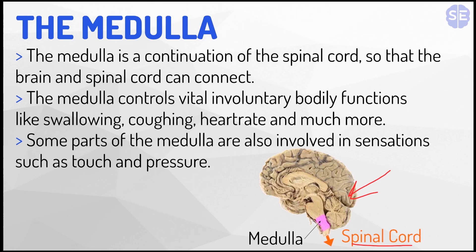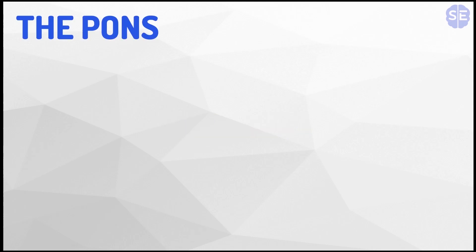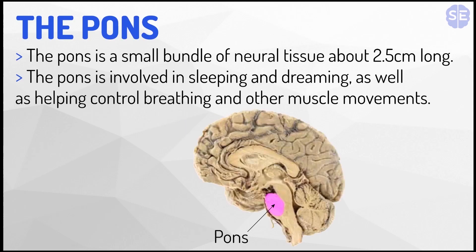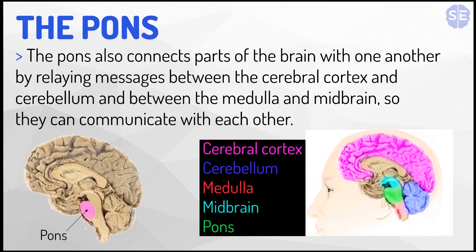Now the last part of the hindbrain: the pons. The pons is a small bundle of neural tissue, about 2.5 centimeters long. The pons is involved in sleeping and dreaming, as well as helping control breathing and other muscle movements. You can see where it is in pink. The pons also connects parts of the brain with one another by relaying messages between the cerebral cortex and the cerebellum, and between the medulla and the midbrain, so that they can communicate with each other.